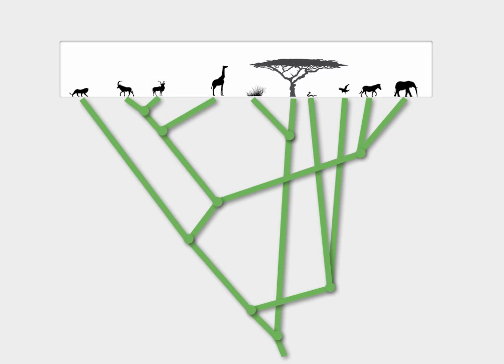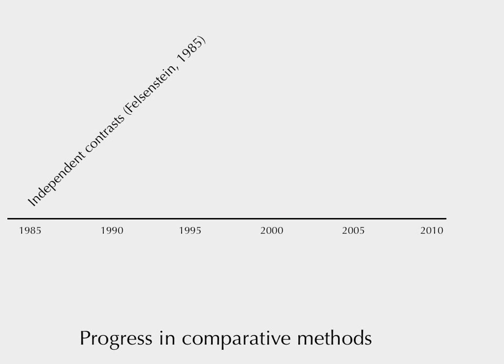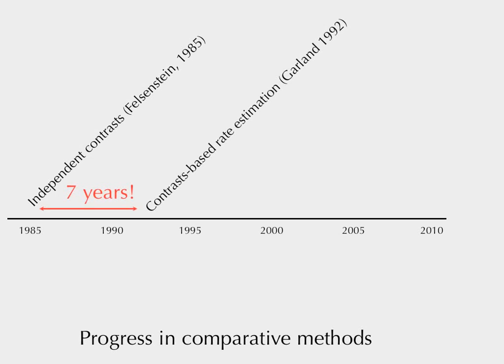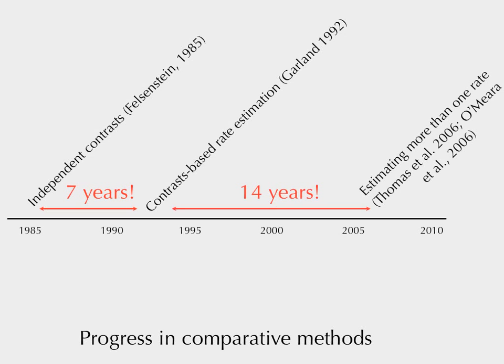To understand questions using phylogeny and data, you need a method. You get a tree, data, and a method. The problem in phylogenetics is that we have some useful methods, but development is very slow. For example, independent contrasts — a famous method for adjusting for non-independent correlation of traits — was developed in 1985. A related method to estimate rates of evolution occurred seven years later. Fourteen years after that, some of us developed methods to have multiple rates of evolution. Fourteen years to get a second parameter — that's a really long time.